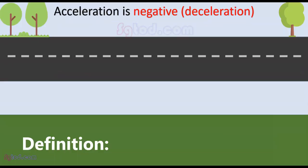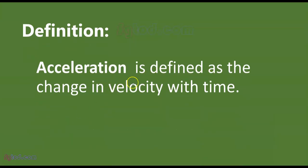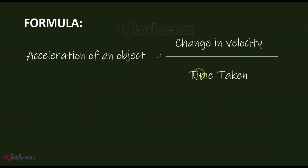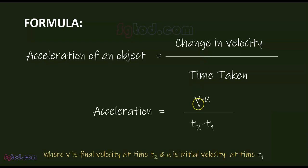By definition, acceleration is defined as the change in velocity with time. Acceleration can be computed by taking the final velocity minus the initial velocity and dividing by the time duration.